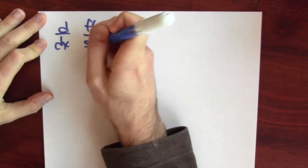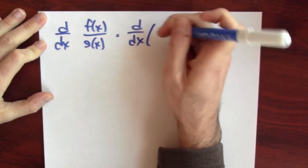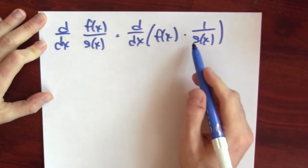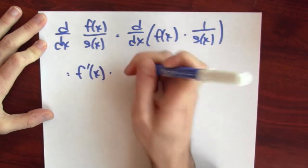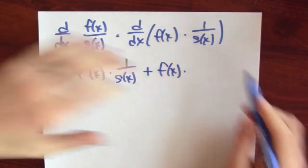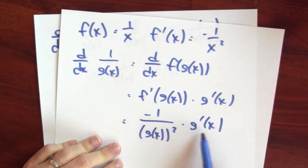So the derivative of 1 over g of x is minus 1 over g of x squared times g prime of x. Now I can use the product rule. If I can differentiate f and I can differentiate 1 over g of x, I can differentiate their product — which happens to be the quotient f of x over g of x. I'm going to rewrite this quotient as a product: the derivative of f of x times 1 over g of x. This is the derivative of a product, so I apply the product rule: the derivative of the first times the second, plus the first times the derivative of the second. We calculated the derivative of the second just a moment ago: the derivative of 1 over g of x is minus 1 over g of x squared times g prime of x.